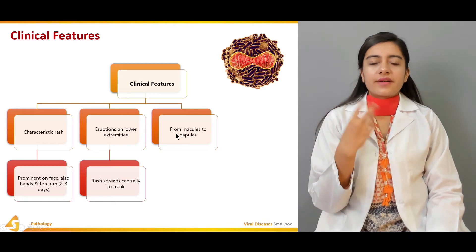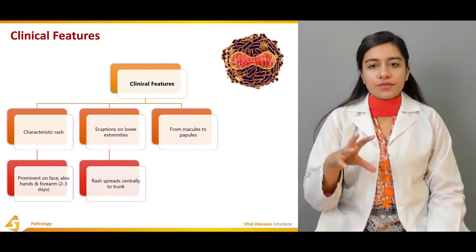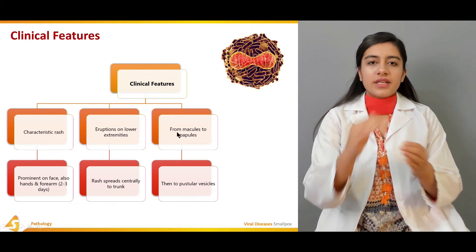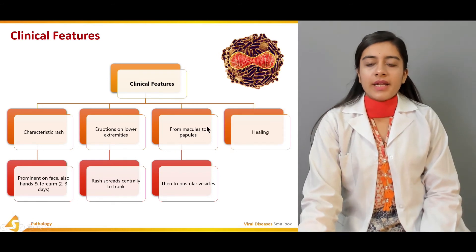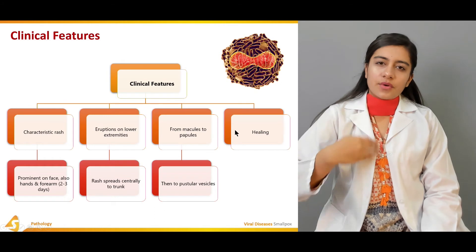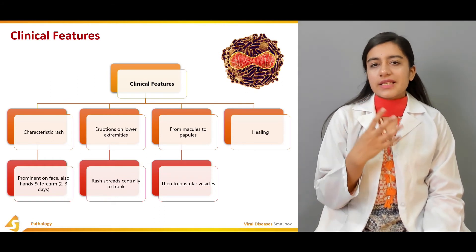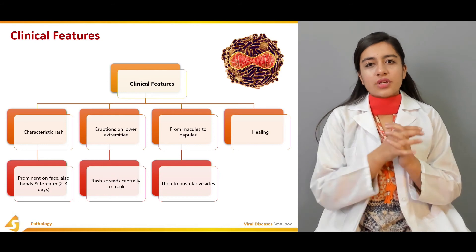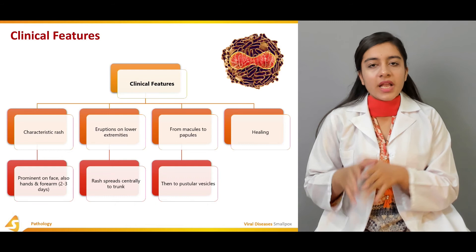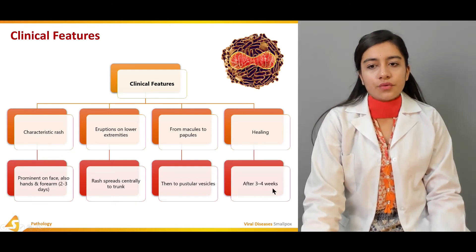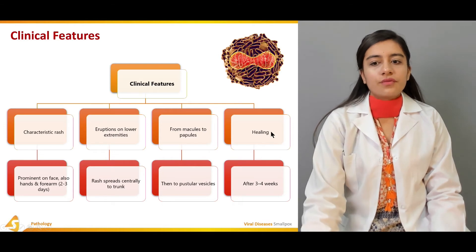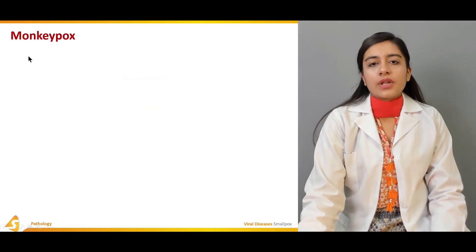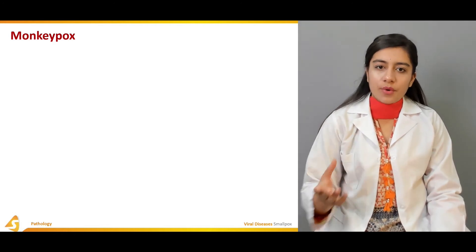The rash first appears as a papule, then transforms to a macule, and then to pustular vesicles — a stepwise formation of a pustule. After starting on the face, spreading to the forearms, hands, trunk, and legs, and transforming from papule to macule to pustule, the healing process begins after three to four weeks. The total duration of infection and skin rash on the body is two to three weeks.